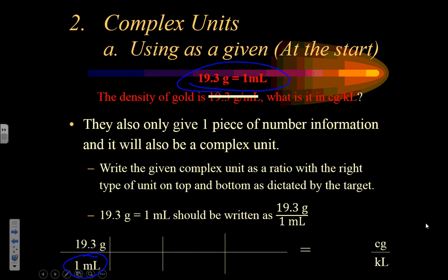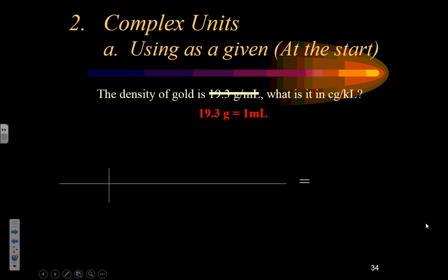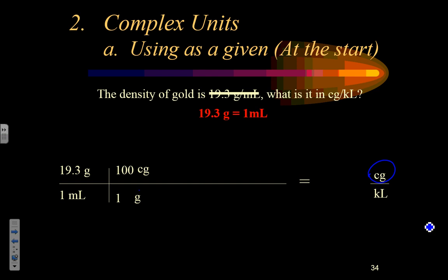The rest of the problem follows the familiar process with one slight twist. We have 19.3 grams on top and one milliliter on bottom, trying to get to centigrams per kiloliter. Do I want grams? No — so grams goes on the bottom to cancel. As a base unit, I can change it to any prefix I want, and the target says centigrams on top. I know there are 100 centigrams in one gram, so that's my valid conversion factor. Grams cancel, and now I'm in centigrams on top — exactly as I want.